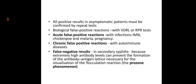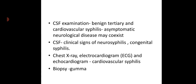Acute false positive reactions occur with infections like infectious mononucleosis, chickenpox, malaria, and pregnancy. Chronic false positive reactions can occur with autoimmune diseases. False negative results can occur in secondary syphilis because extremely high antibody levels can prevent formation of the antibody-antigen lattice necessary for visualization of the flocculation reaction — that is called the prozone phenomenon. CSF examination should be done in benign tertiary and cardiovascular syphilis, as asymptomatic neurological disease may coexist.